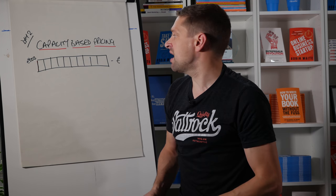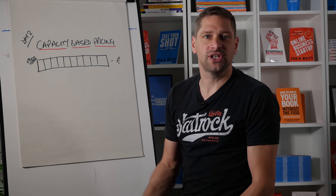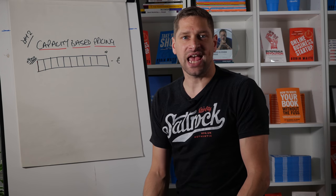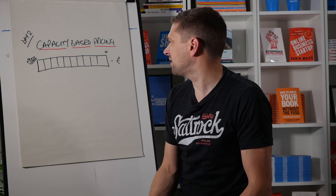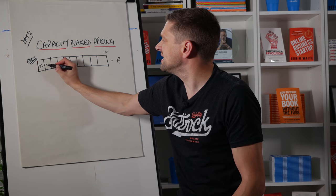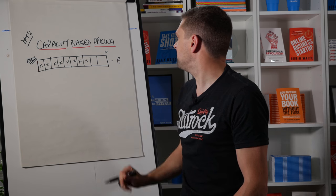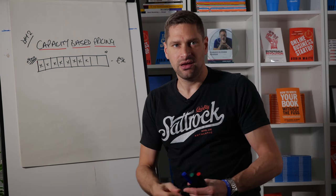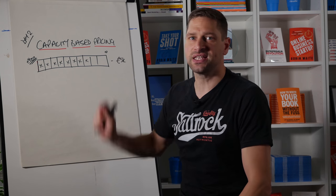So imagine this scenario. Your average product costs £500 or it could be a service which is £500 a month, and your capacity to deliver is 10 units. So you can deliver 10 clients every single month. Now imagine if you had all 10 of these units filled up and we were making £5,000 a month. But our capacity's full, we're working 40 hours plus a week to deliver to those 10 clients.